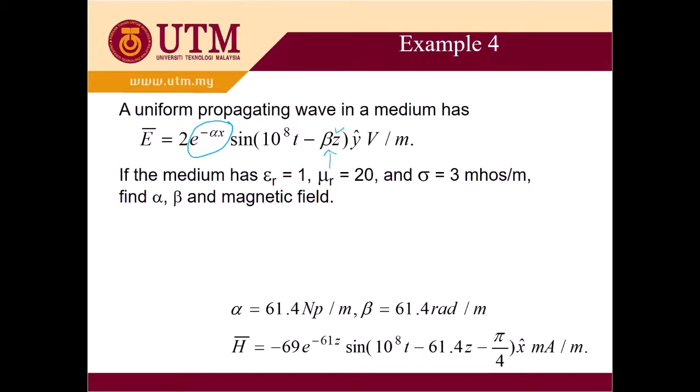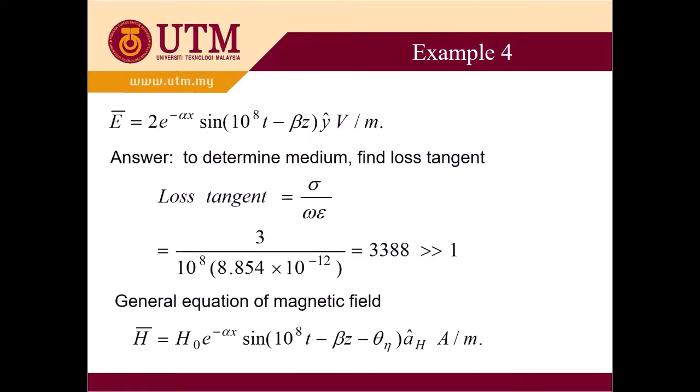This is the lossy component or attenuation component and this is beta. This is the direction of propagation z and this is the oscillating component of E. This is not x but y. So that's why I said you have to observe the equation carefully. This is another extra information about the material given and this is basically the answer. So how can we obtain this answer? We have to see one by one.